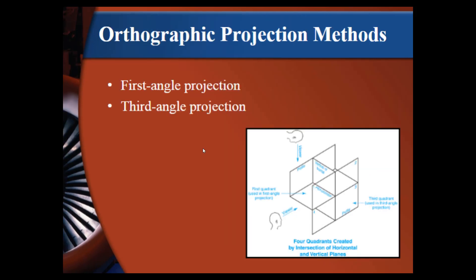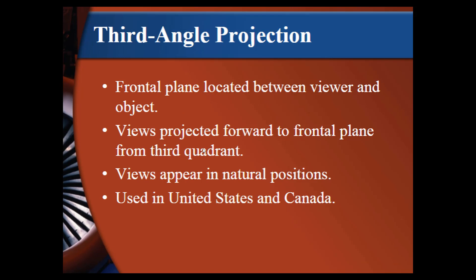Orthographic projection methods. There is first angle projection and third angle projection. Third angle projection. The frontal plane located between viewer and object. The views projected forward to frontal plane and third quadrant. And views appear in natural positions. This is what is used in the United States and Canada and this was shown in a previous slide.